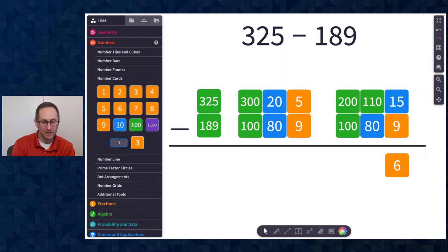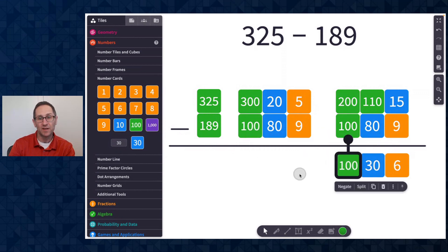So 320 and 5 is the same as 200, 110, and 15. 100 minus 80 is 30. So I'll type in 30. And then 200 minus 100 is 100. So there is my answer, 136.